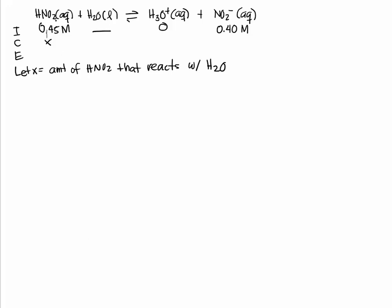Look at the balanced equation. For every one HNO2, you have one H3O plus and one NO2 minus. So if X amounts of HNO2 are reacting, that means X amounts of H3O plus are produced as well as X amounts of NO2 minus because it's one to one to one.